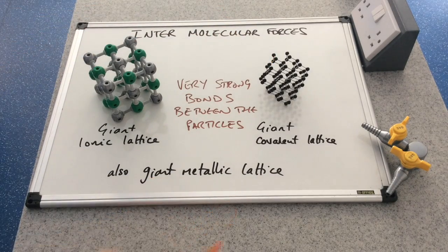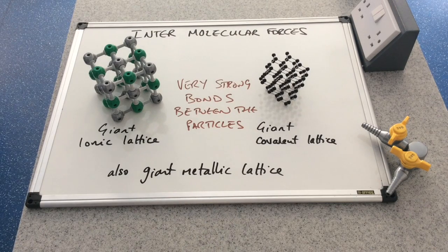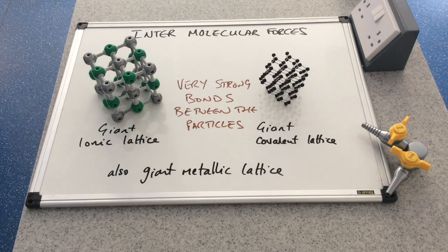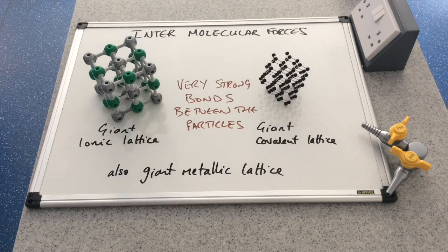And in giant metallic lattices, we've got electrostatic attraction between positive metal ions and delocalised electrons. So these are very strong bonds, and require quite a lot of energy to break them down.